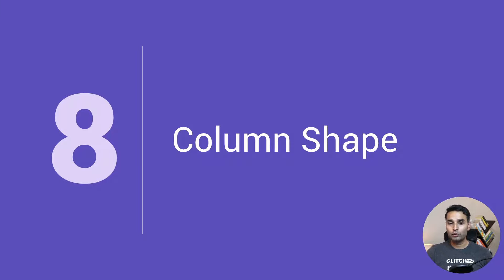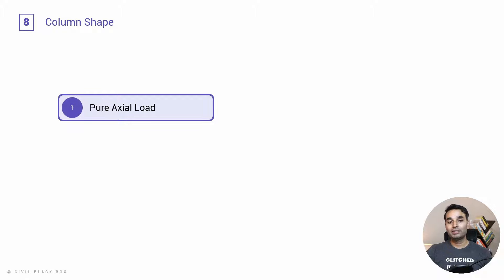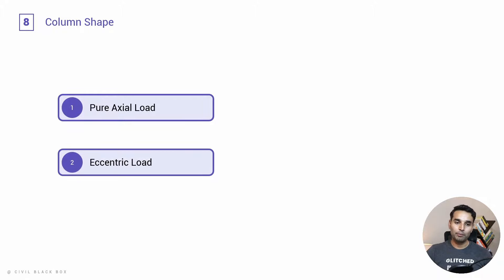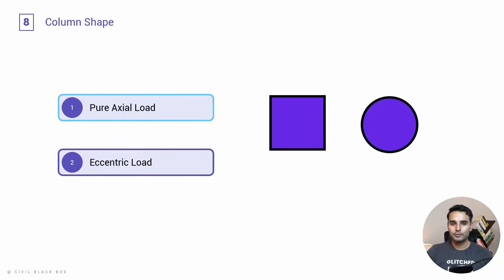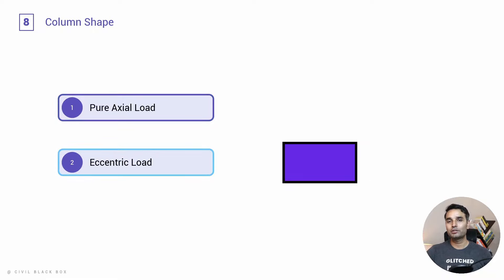Concept number eight is about column shape. The column shape depends on whether the load applied is a pure axial load or an eccentric load. Pure axial loads are theoretical; for those, symmetrical shapes like squares or circles work. For eccentric loads, which is the usual case, a rectangular shape is preferred where one dimension is greater than the other to handle the eccentricity and resist the moments.